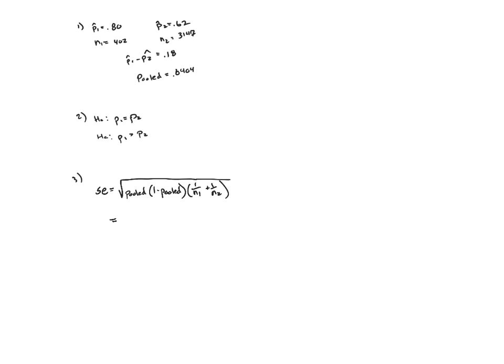So, plugging all of my values in here, I need to be really careful. Remember, my pooled proportion is going to be this 0.6404, 1 minus 0.6404, 1 over 402 plus 1 over 3147.